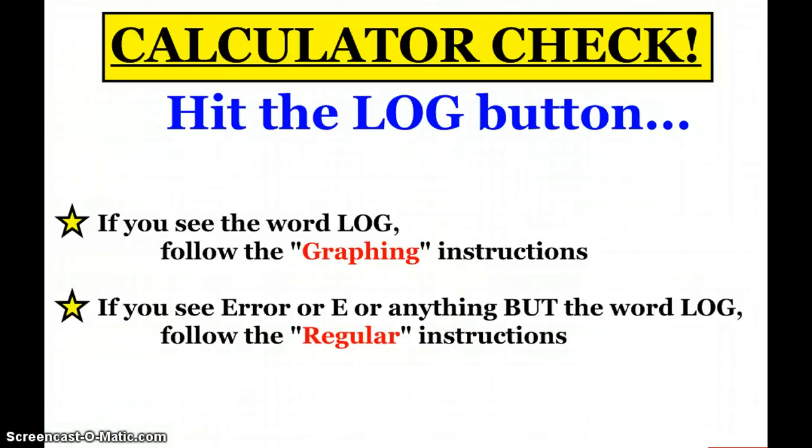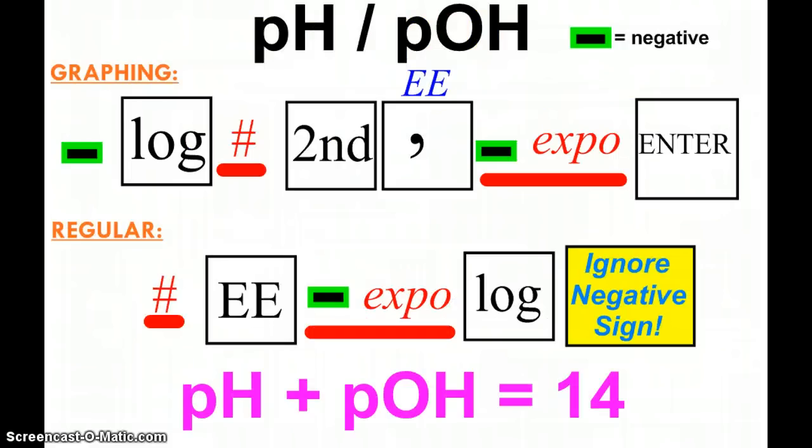What we're going to look at here, you want to check your calculator. Turn it on, push the log button. If you see the word log, then you're going to follow the graphing instructions. So if you have a graphing calculator, the graphing instructions. If you hit log and see error or E or something else, then you're going to want to follow the regular instructions. These are the instructions you want to use to type into the calculator. I'll go through an example with one of these, but pause for a moment and write that down where it says write your calculator instructions here.